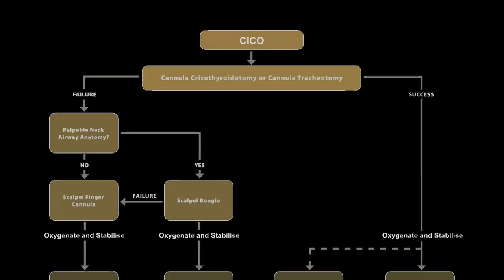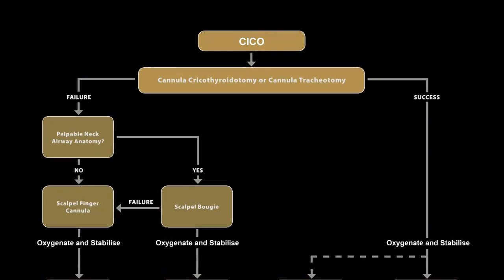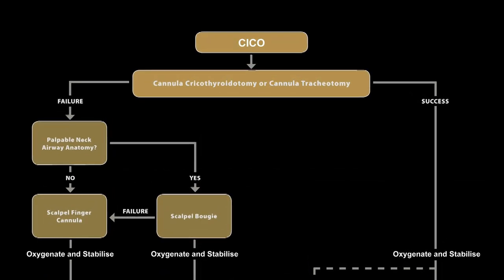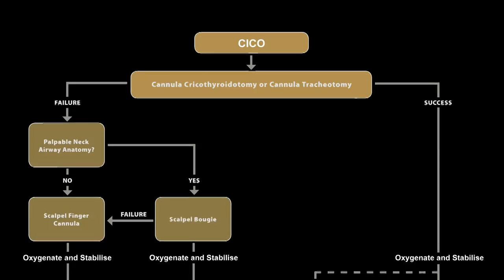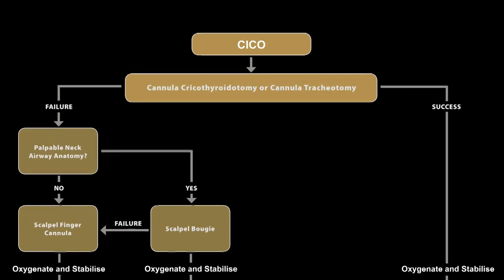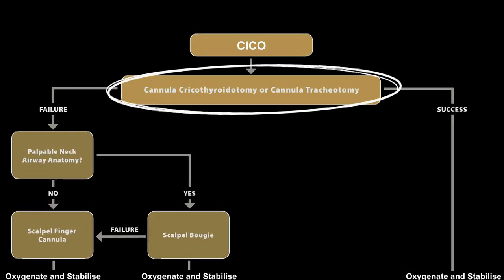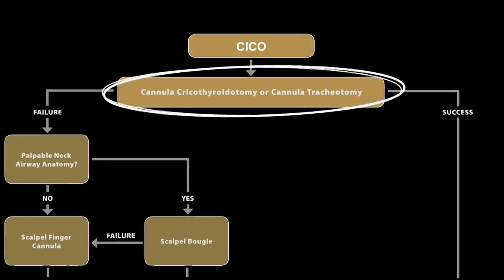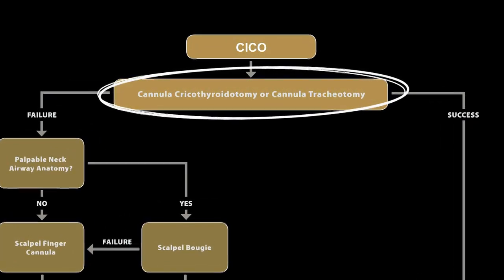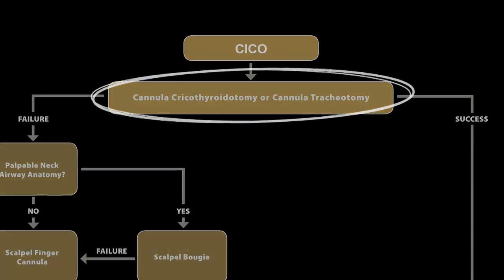In a can't intubate, can't oxygenate scenario, even if it's not possible to palpate any recognizable airway anatomy, the anaesthetist should initially undertake a cannula cricothyroidotomy or cannula tracheotomy to achieve safe and fast oxygenation of the patient.